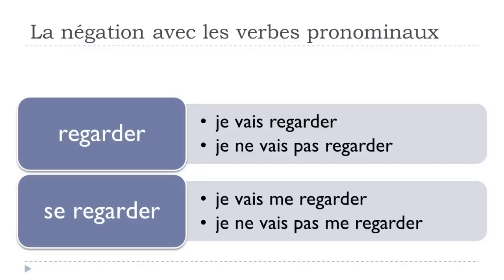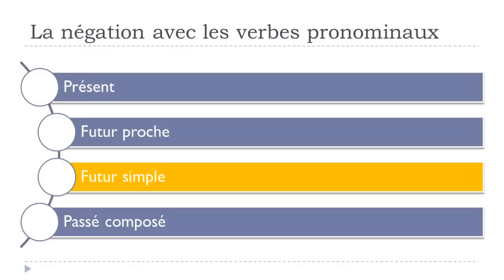With SE REGARDER, you get JE VAIS ME REGARDER — I am going to watch myself. For the negation, JE NE VAIS PAS, and it behaves the same way: you put NE and PAS before and after the first verb. So JE NE VAIS PAS ME REGARDER.